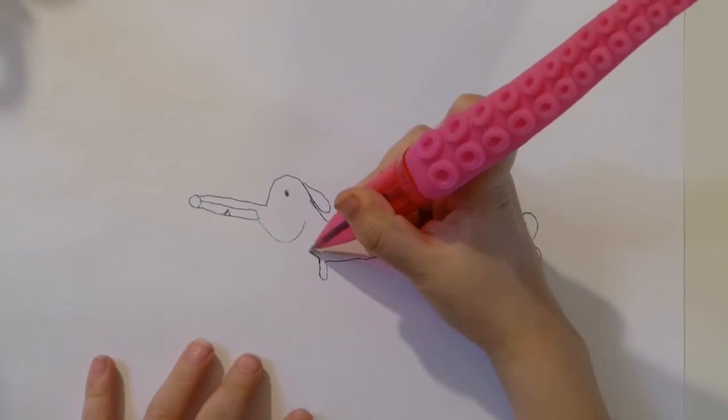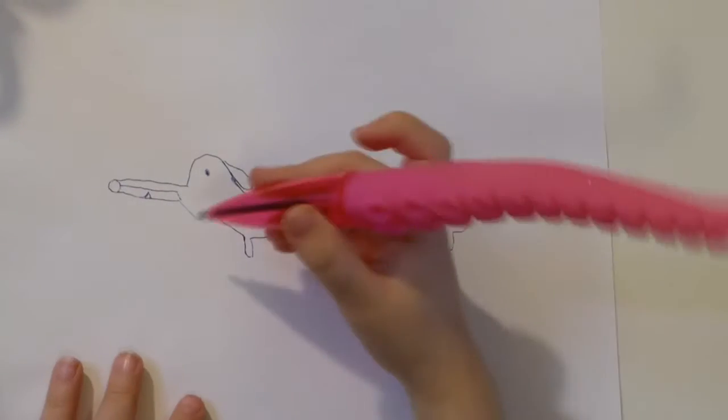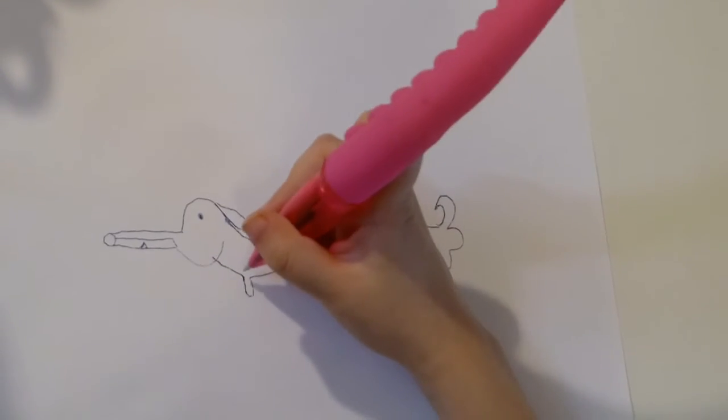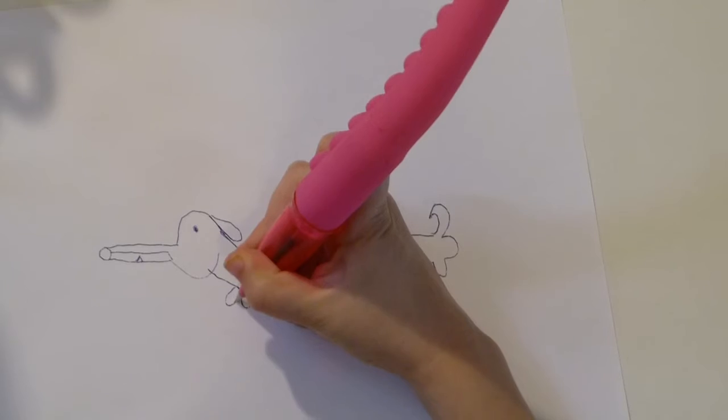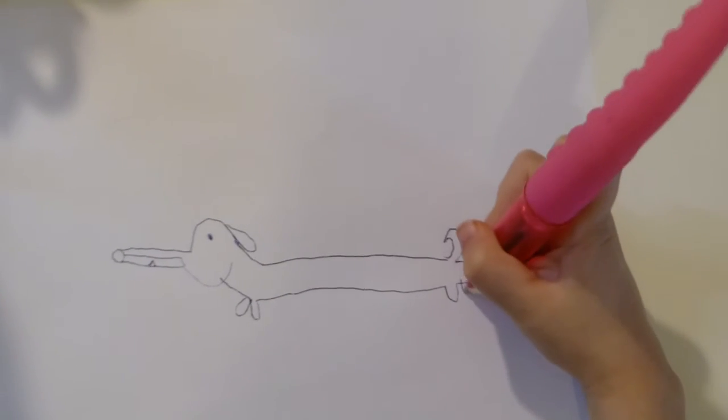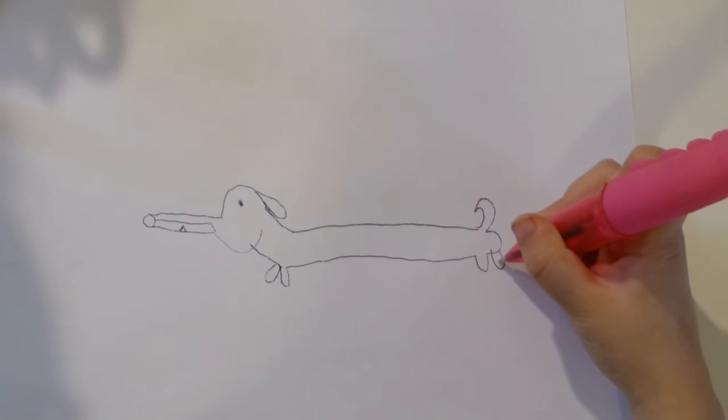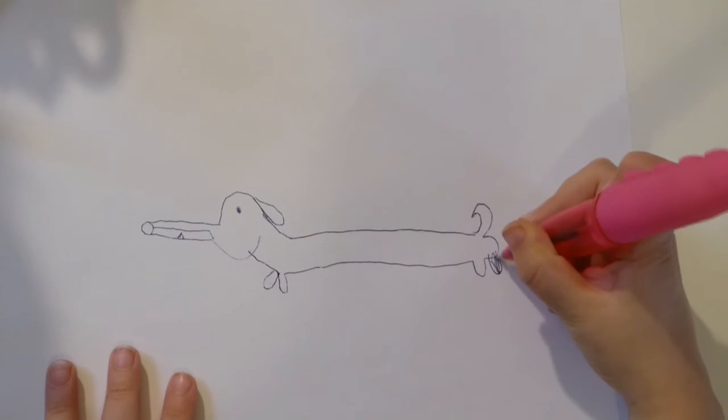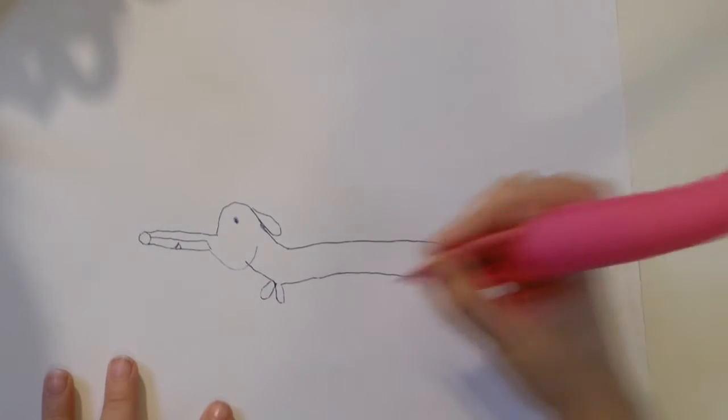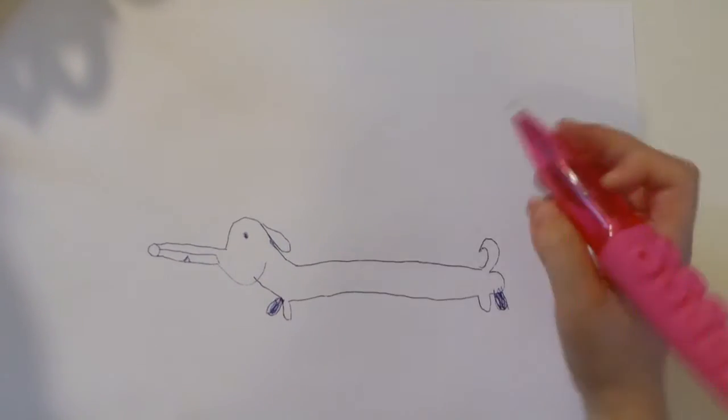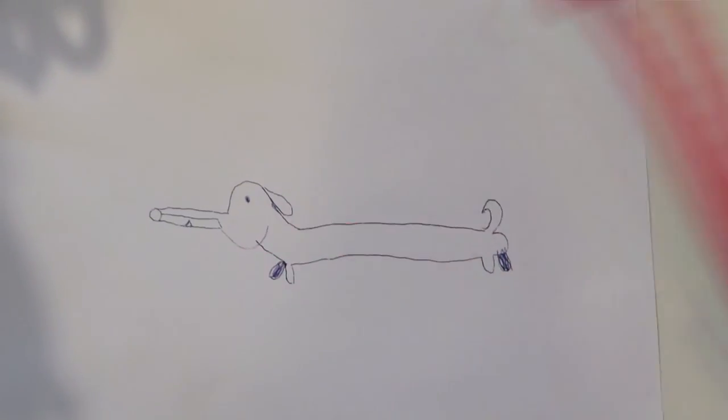Now move up to make its neck. And for its back leg, you can just make it like this or this behind so it looks like its back, or you can see it in. And that's how you draw a cartoon wiener dog. There you go.